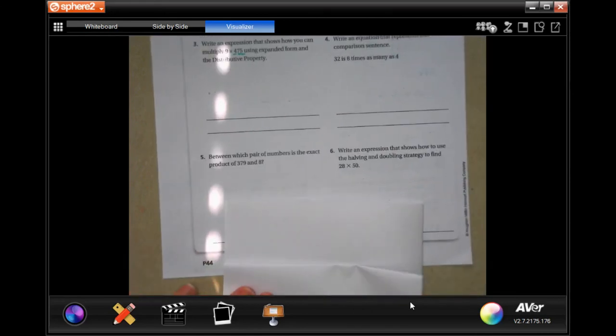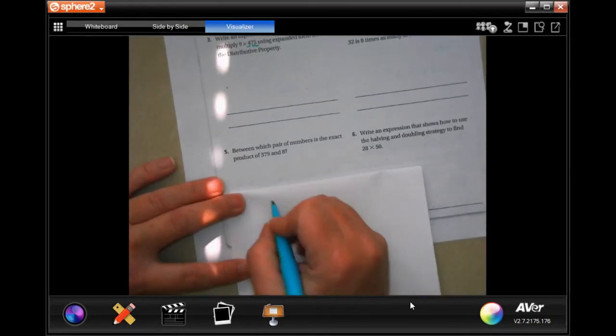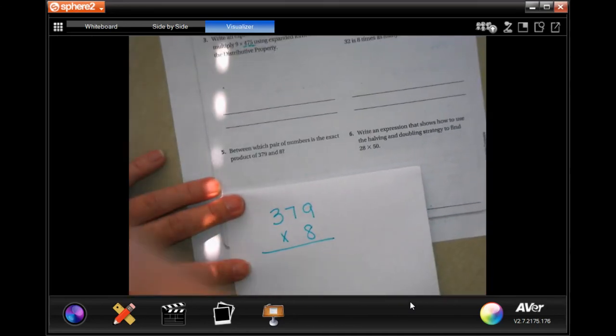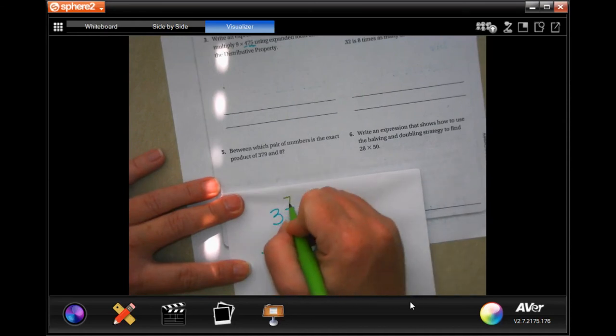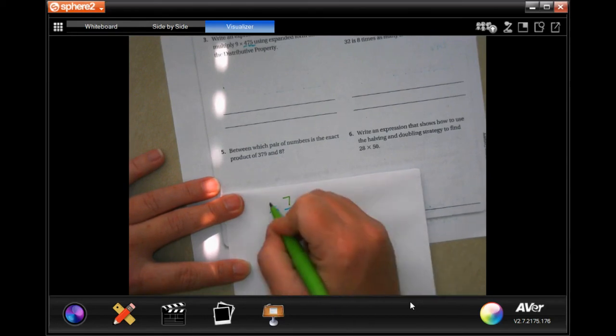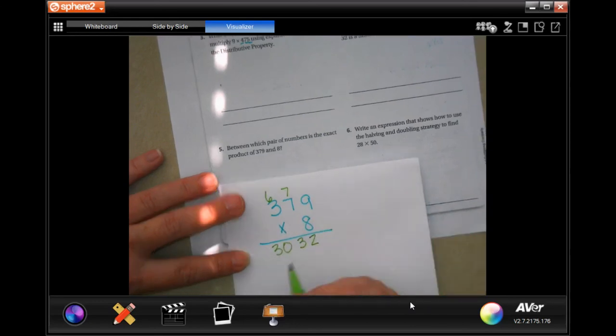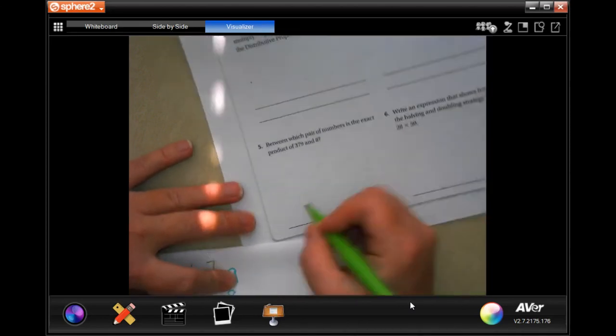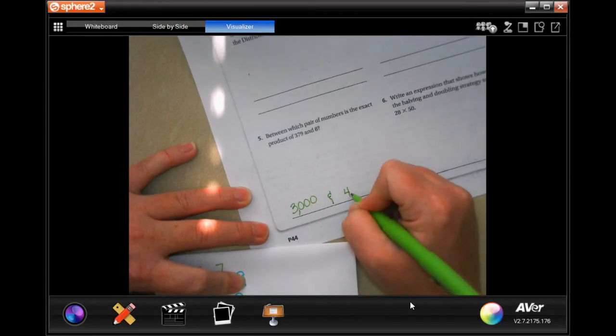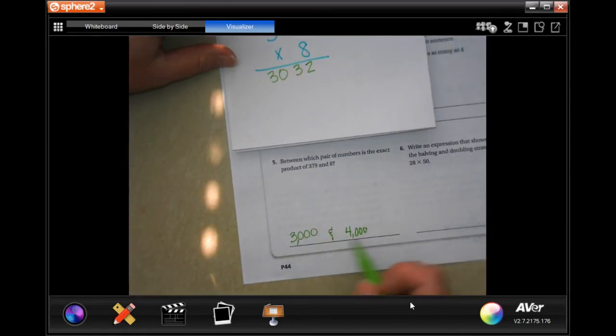Number 5 says between which pair of numbers is the exact product of 379 and 8? Well, product is multiplication, guys. So 8 times 9 is 72. Carrier 7. 8 times 7 is 56. Plus 7 more is 63. Carrier 6. 8 times 3 is 24. Plus 6 more is 30. So between which pair of numbers? Well, I would say between 3,000 and 4,000, right? 3,032 is between 3,000 and 4,000.